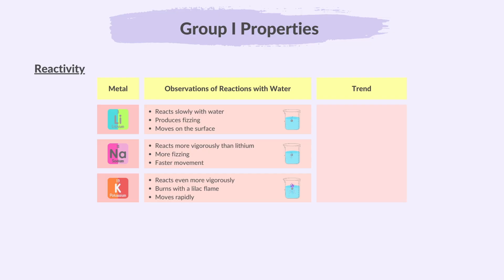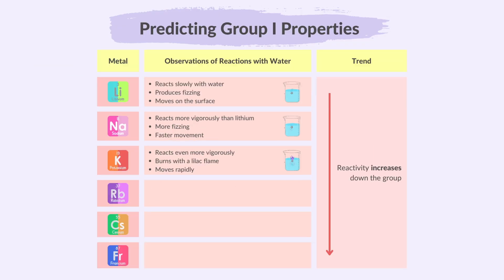Based on the above observations, we may identify a trend occurring as you go down the group: the reactivity of group 1 metals increases as you move down the group. Given this information about the first 3 elements, we may predict that the lower group 1 metals will react even more strongly.